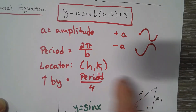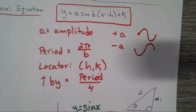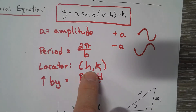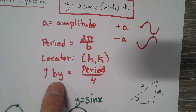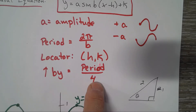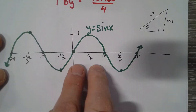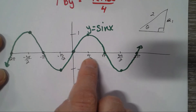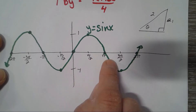The locator point is h comma k, much like our parabolas, cubics, and absolute value functions. Notice it's x minus h inside the parentheses. There's also something called 'up by,' which tells you what increment you move along the x-axis. You always take the period and divide by four. So for this example, the up by is pi over two — we go up by pi over two each time: one-half pi, one pi, one-and-a-half pi, two pi.